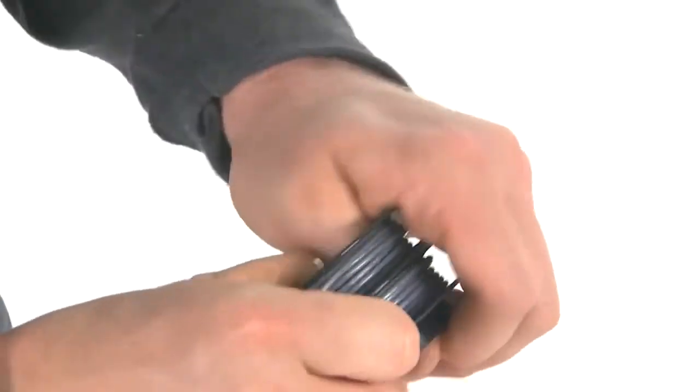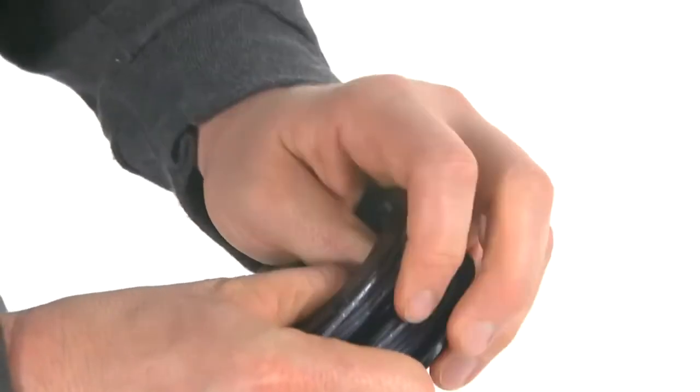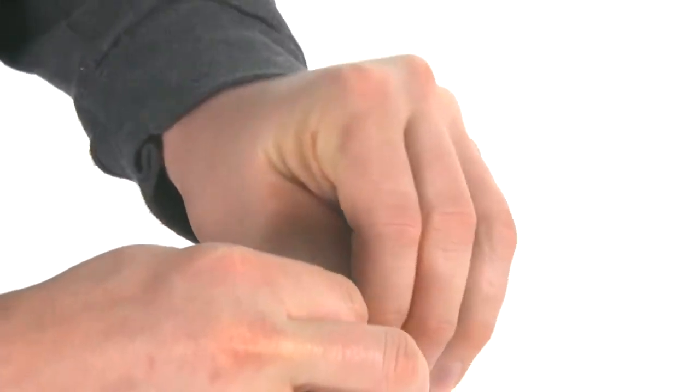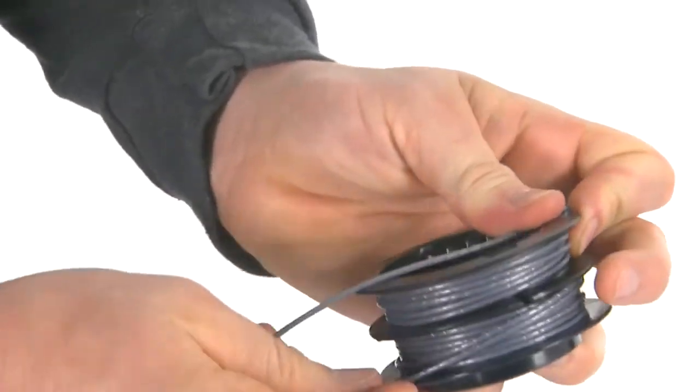When you have about one foot left to go, insert the line in the notches on the outside rim of the spool. One side will cross over the center to attach.